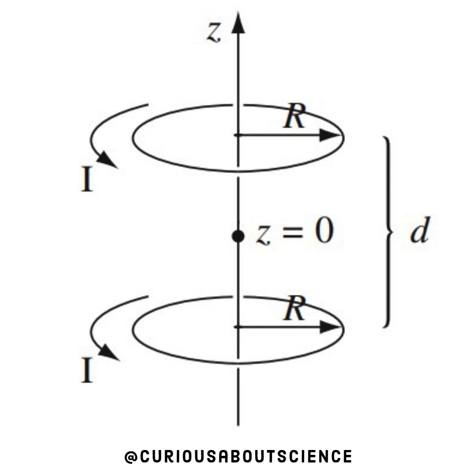All right, so let's draw this out. We get a z-axis here, z equals zero being the midpoint of the two loops that are separated by distance d. Many of you probably know what this is called, so I'll save it for that part.